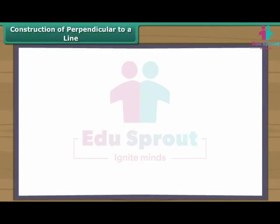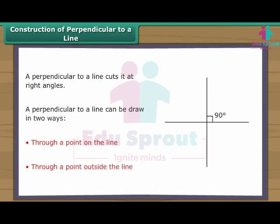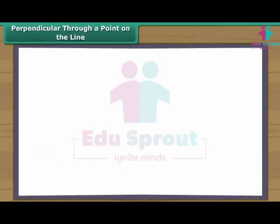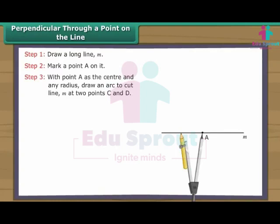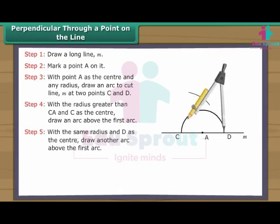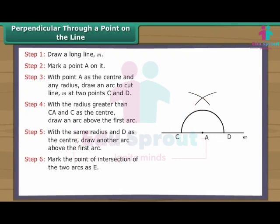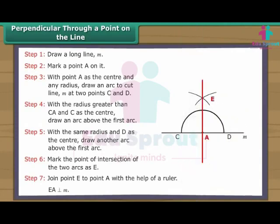Construction of perpendicular to a line. A perpendicular to a line cuts it at right angles. A perpendicular to a line can be drawn in two ways: through a point on the line, or through a point outside the line. Perpendicular through a point on the line: Draw a long line M. Mark a point A on it. With point A as the centre and any radius, draw an arc to cut line M at two points C and D. With a radius greater than CA and C as the centre, draw an arc above the first arc. With the same radius and D as the centre, draw another arc above the first arc. Mark the point of intersection of the two arcs as E. Join point E to point A with the help of a ruler. EA is perpendicular to line M.